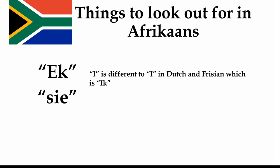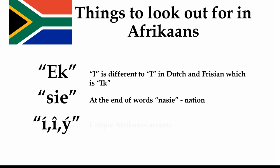We also have words that end in '-sie'. For example, 'nasie', which means 'nation'. In Dutch, it would end with '-tie'. So you know that if you're seeing a word which ends in '-sie', then it's more likely to be Afrikaans. Like with Frisian, these three accents are completely unique to Afrikaans — they're not used in Dutch or Frisian. So if you see one of these three accents used, then the language you are seeing is Afrikaans.